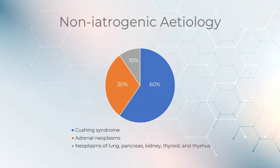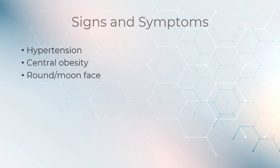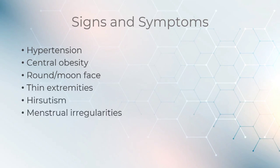Here you can see non-iatrogenic etiologic factors — please pause the video to take a closer look. Signs and symptoms include hypertension, central obesity, round or moon face, thin extremities, hirsutism, menstrual irregularities, hypogonadism, and skin fragility.